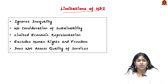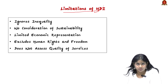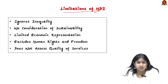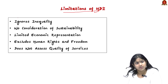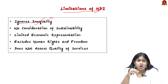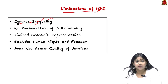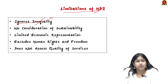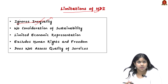Now let us look into the limitations of the HDI. The HDI has been criticized, both today and before, as it does not consider many aspects. First, it ignores inequalities — it does not take into account the disparities among people within the same income categories, even though income is one of the key criteria for measuring HDI.